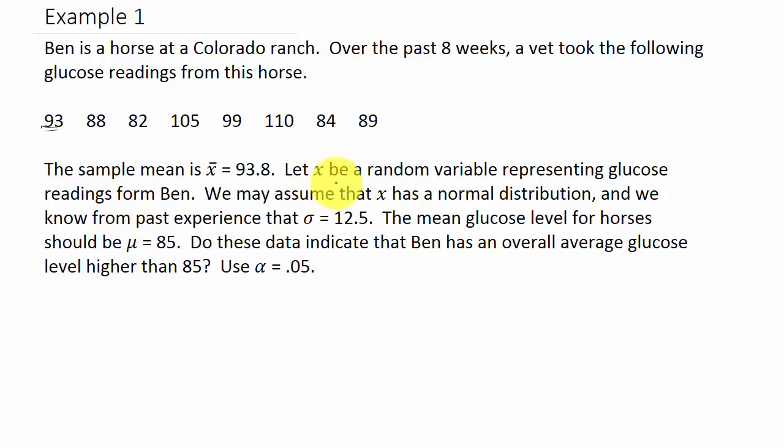Let x be a random variable representing glucose readings from Ben. We may assume that x has a normal distribution, and we know from past experience that sigma equals 12.5. This 12.5, that's not the standard deviation of this sample; this is the standard deviation of all the horses of his breed.